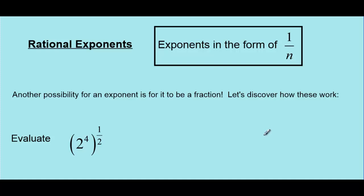What happens if our exponent is a fraction? We're going to start with this example: we have 2 to the exponent 4 in brackets, and that entire power is to the exponent 1/2. We want to figure out what an exponent of 1/2 even does. Using the exponent law where an exponent outside of a power means we multiply the exponents, this is equivalent to 2 to the exponent 4 times 1/2, which is 4/2, or simply 2. So this whole thing is equivalent to 2 to the exponent 2, which equals 4.